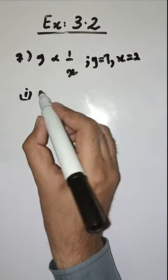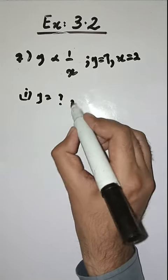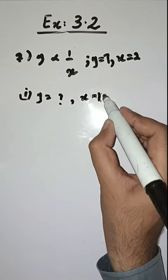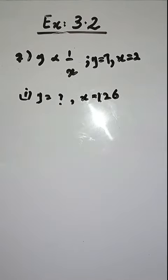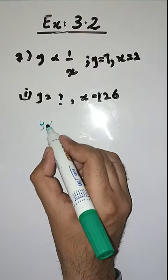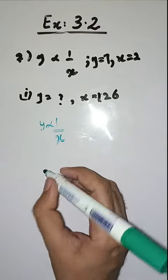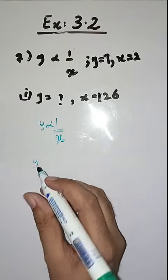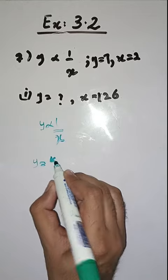Find y when x is equal to 126. So students, what will we do? Simply, हमारे पास relation है y is inversely proportional to x, so proportionality का sign हटाएंगे, हमारे पास आएगा y is equal to k by x.